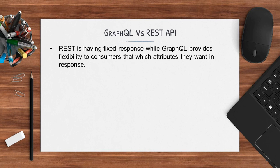In REST API we have a fixed response. For example, if you have one REST API exposing 10 fields to consumers in the response, every consumer will get those 10 fields. But in GraphQL, for that same operation, different consumers can ask for different fields — one may ask for just 1 field, another may ask for 5, or 3, or 7.